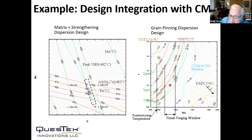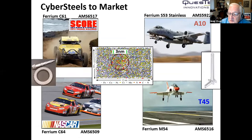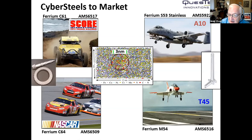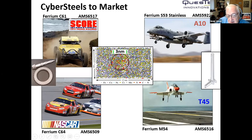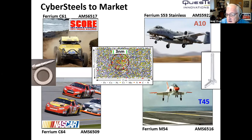It is a very efficient process and these calculations can be performed on a laptop. The first commercial products are four steels commercialized by Questek: two flight-qualified aircraft landing gear steels and two types of very high-performance gear steels doing very well in racing applications on their way to helicopter applications. All of these designs involve the driving force-based strength model that optimizes M2C carbides at a three nanometer size scale for very efficient strengthening, allowing better management of the trade-off with fracture toughness and corrosion resistance.